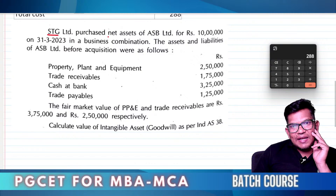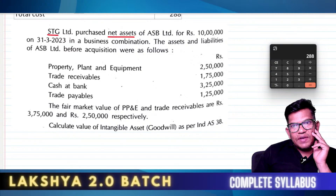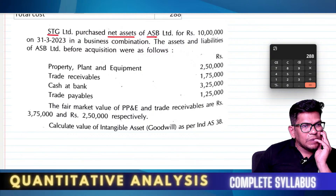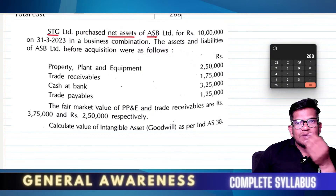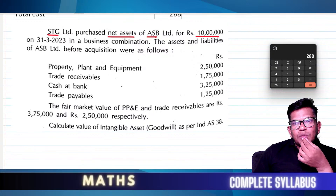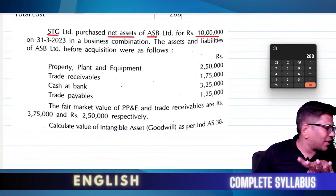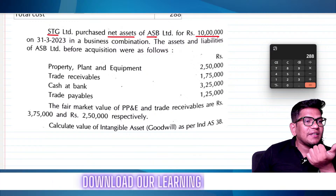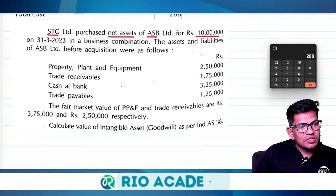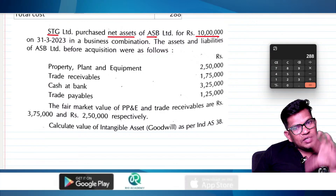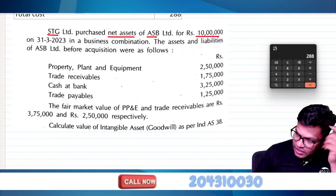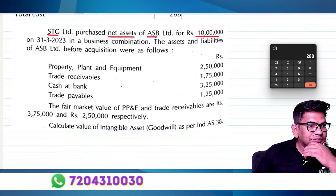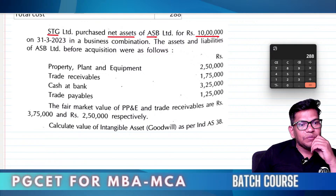STG Limited purchased the net assets of ASB Limited. The purchase price is 10 lakh rupees. This is a very important chapter, and I want to go through it carefully. For YouTube members especially, I want to go with the consolidated balance sheet — inventory and 10 marks are mainly important.